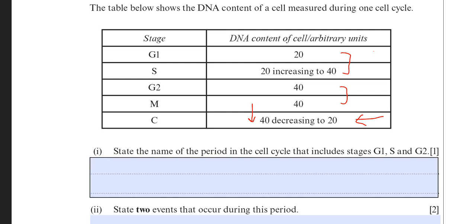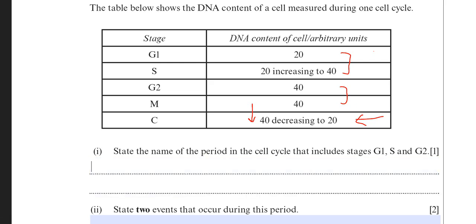So the first question here then is state the name of the period in the cell cycle that includes stages G1, S, and G2. Well the answer there of course is interphase.